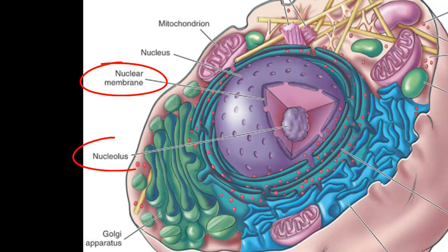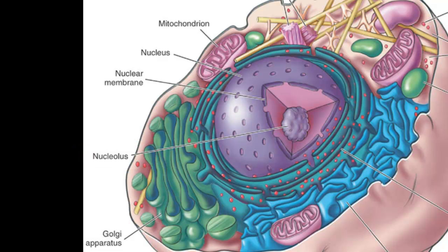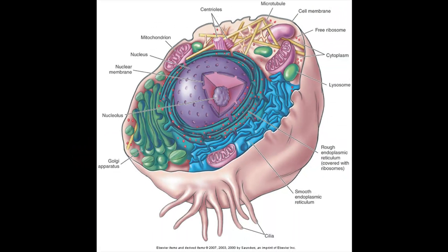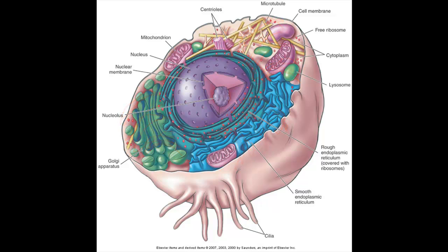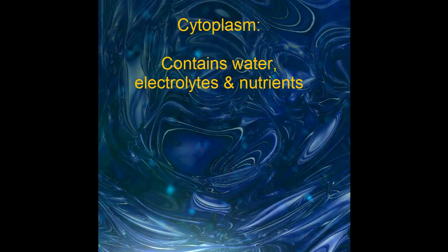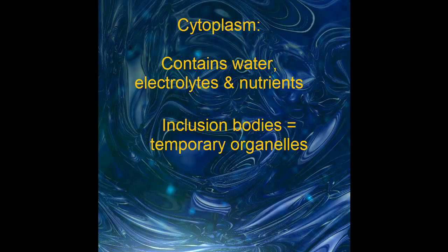Inside the nucleus, it has its own little brain — the nucleolus — and it's inside the nucleolus where our genes are contained. If the yolk of the egg is like the nucleus, then the egg white is kind of like the cytoplasm — the watery stuff surrounding the nucleus inside the cell membrane. All the other little organelles are suspended in that cytoplasm. It's mostly water, and it also has some electrolytes and nutrients in it, as well as something called inclusion bodies — basically a temporary organelle.